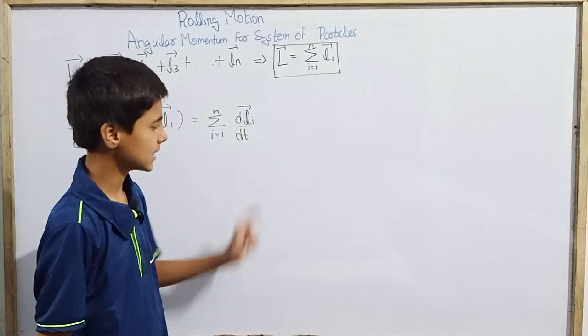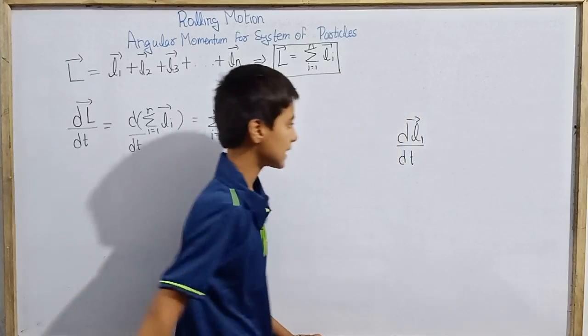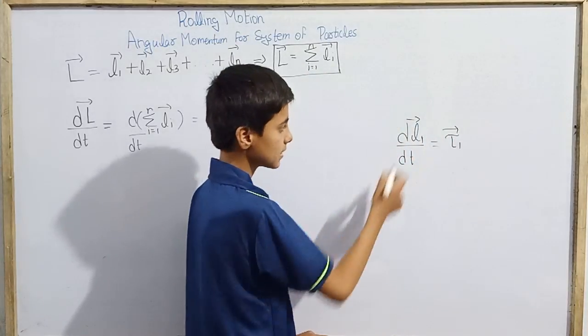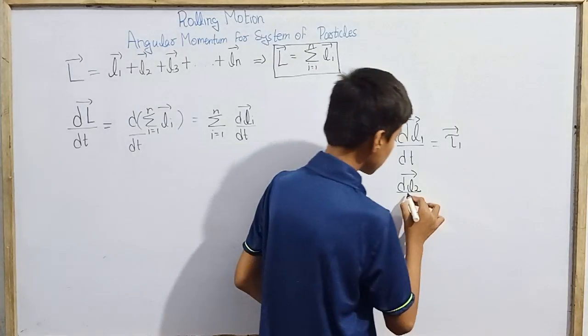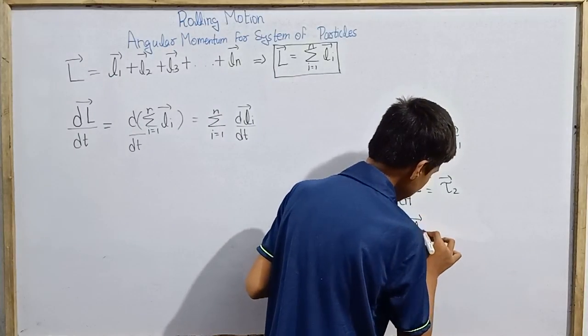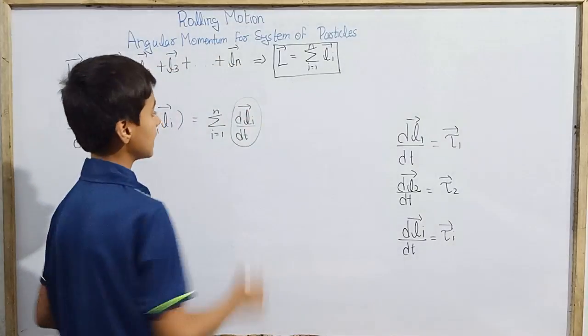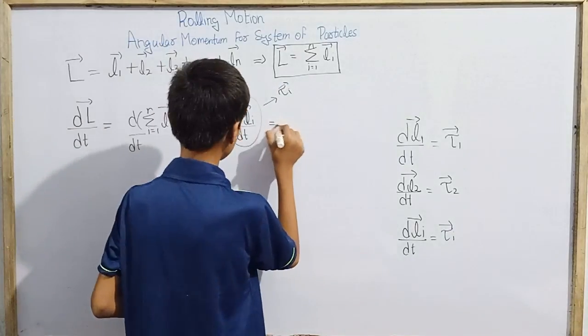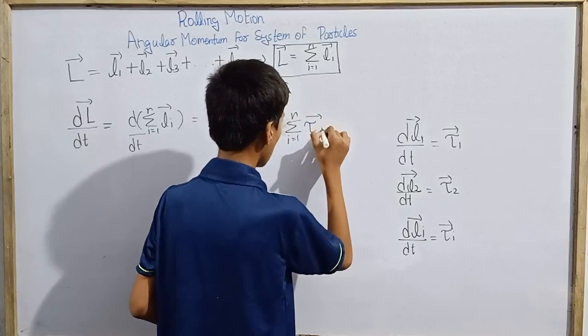d of vector Li over dt, actually we have already studied. First particle, suppose first particle angular momentum, that is vector L1. Differentiate it with respect to time, you will get first particle torque, this is vector tau 1. Second particle, d vector L2 over dt is vector tau 2. For the ith particle, d vector Li over dt equals vector tau i. We have here d vector Li over dt, this you can write as vector tau i. This just goes to sigma, this is sigma i equals 1 to n, vector tau i.